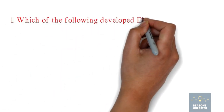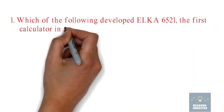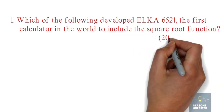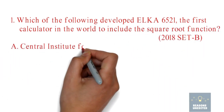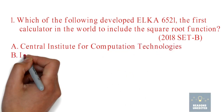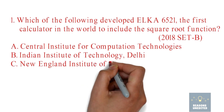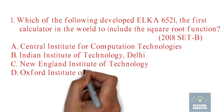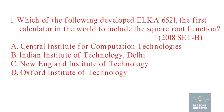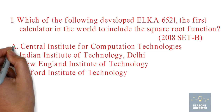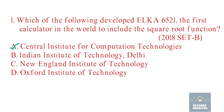Question number 1. Which of the following developed Elka 6521, the first calculator in the world to include the square root function? Option A: Central Institute for Computation Technologies. Option B: Indian Institute of Technology, Delhi. Option C: New England Institute of Technology. Option D: Oxford Institute of Technology. The correct answer is Option A, Central Institute for Computation Technologies.